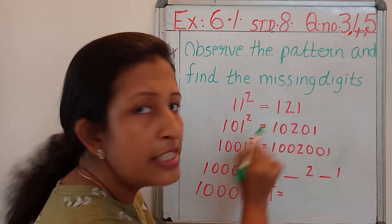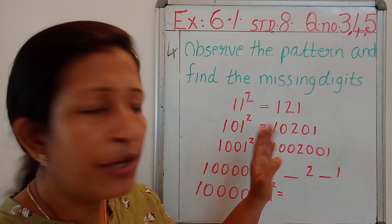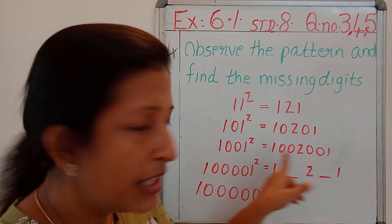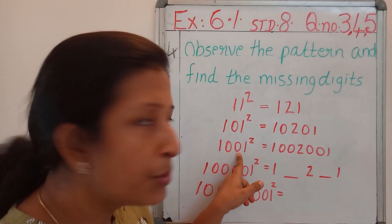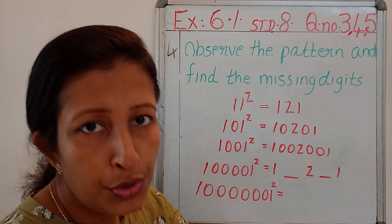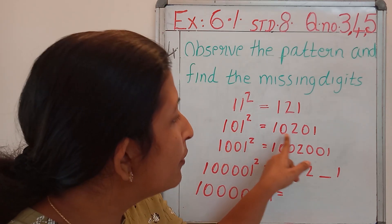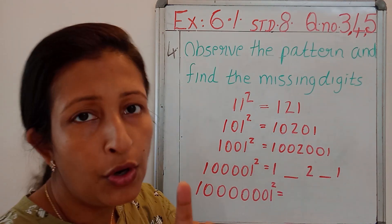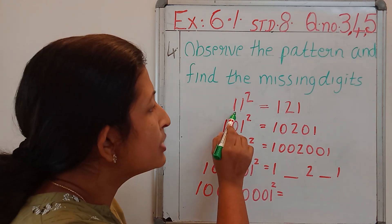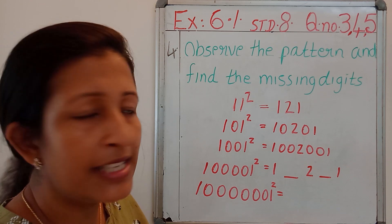Here there are no zeros. So the pattern is going on zeros. Here are two zeros, so in between 1, 2 and 1, we wrote two zeros. Here only one zero, so in between 1, 2, 1, we wrote only one zero. Here there are no zeros, so we didn't write any zeros over here.